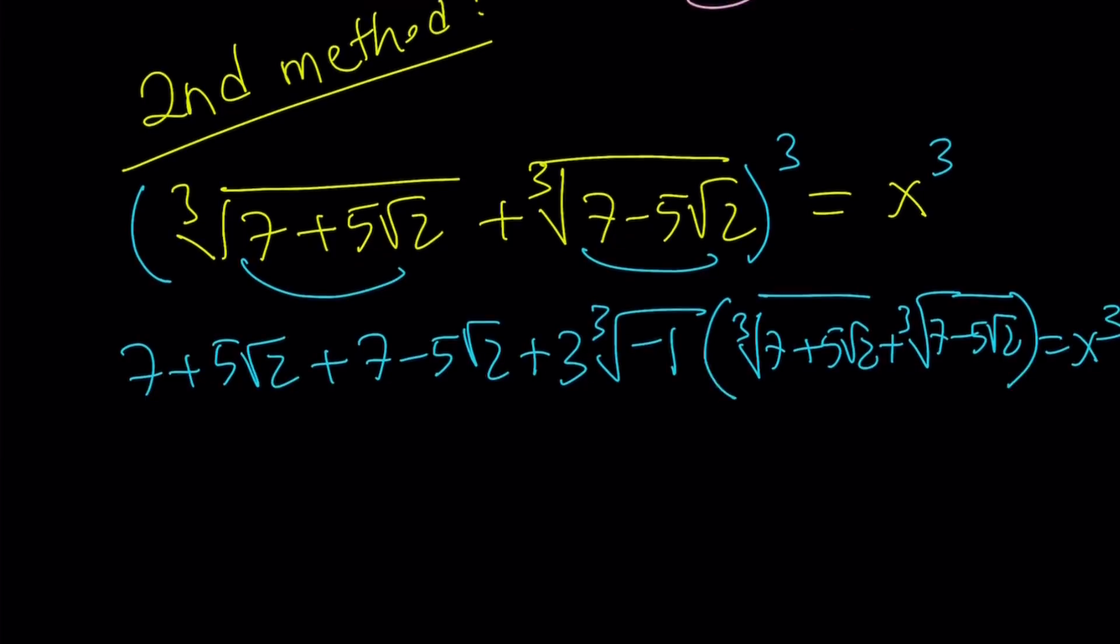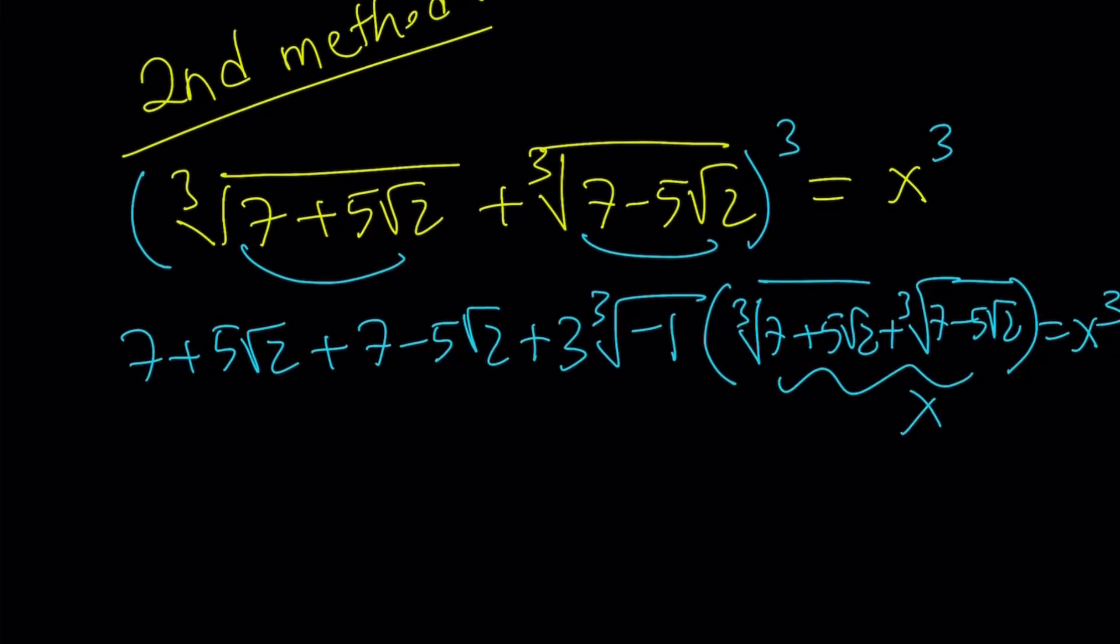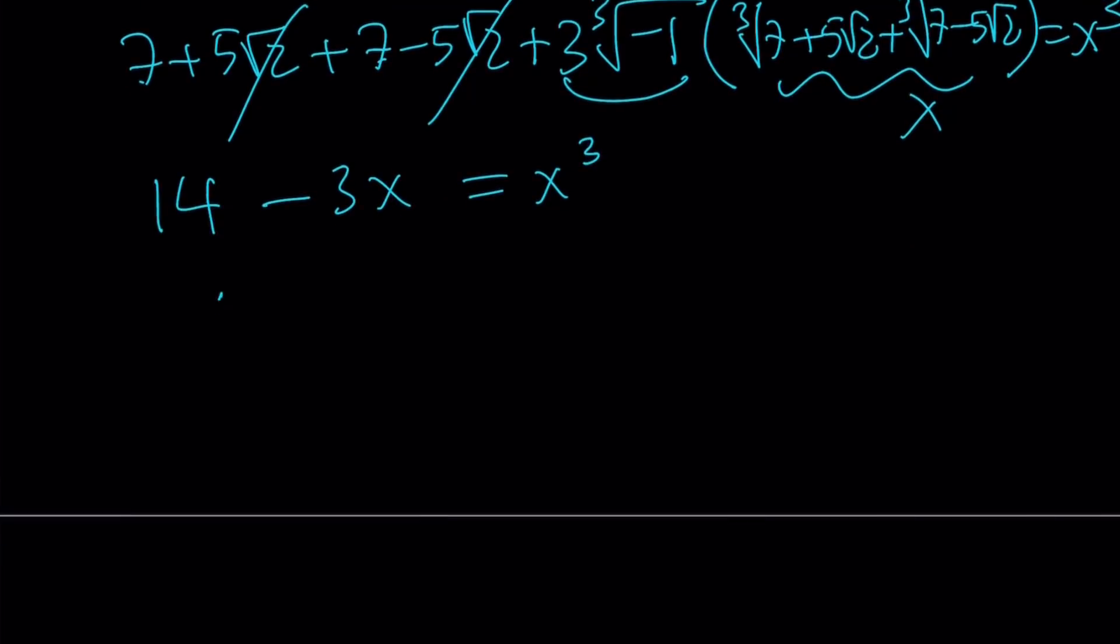These two cancel out. 7 plus 7 equals 14. Everything falls apart. That's a negative 3. 14 minus 3x is equal to x cubed. Let's put everything on the same side. x cubed plus 3x minus 14 is equal to 0.